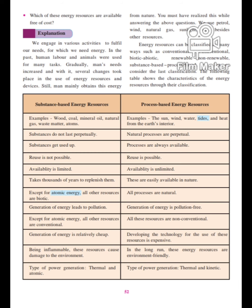Energy resources are classified as substance-based and process-based energy resources. Let us first see substance-based energy resources. Examples are: wood, coal, mineral oil, natural gas, waste matter, and atoms. These are all substance-based energy resources.